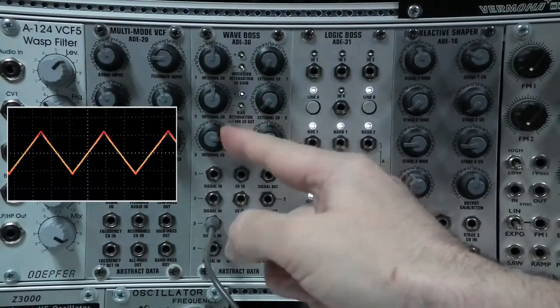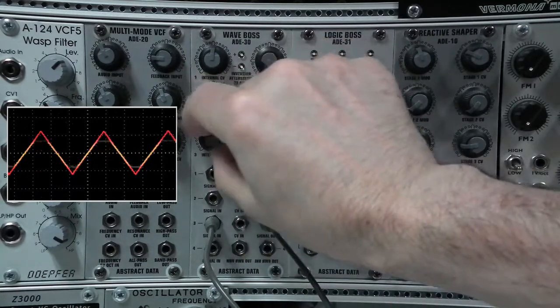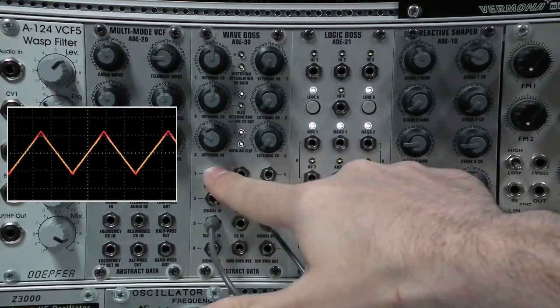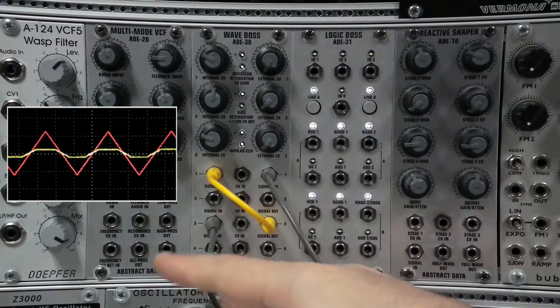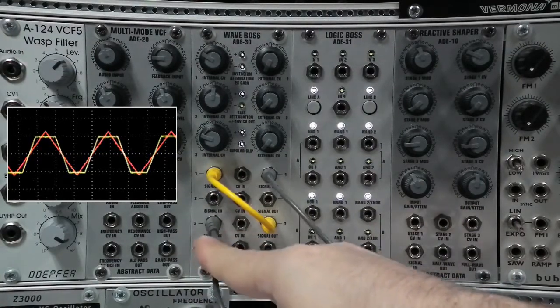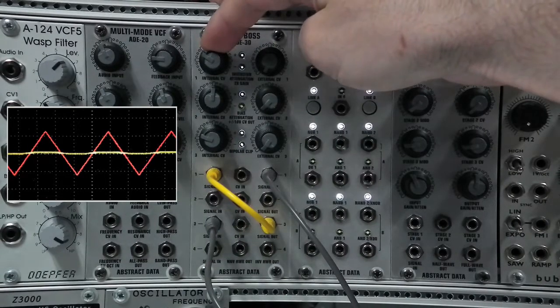In this patch we're going to be demonstrating stage three which is the bipolar clipping stage. The clipping works that as you lower the threshold you're increasing the clipping. So now we're going to demo a slight variation on that last patch. We're running the triangle wave into stage three. You can see that we're running out of stage three up into stage one here.